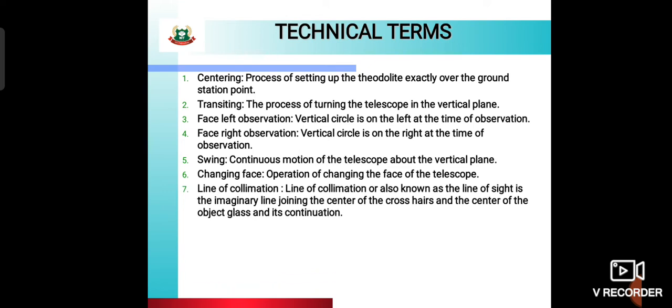Line of collimation: what does it mean? The line of collimation is also known as the line of sight. It is an imaginary line joining the center of the crosshair and the center of the object glass and its continuation. This is called the line of collimation.